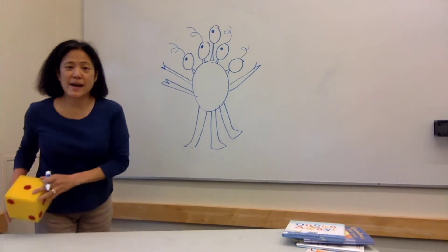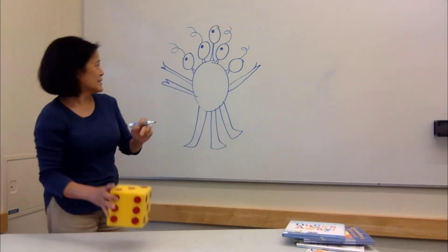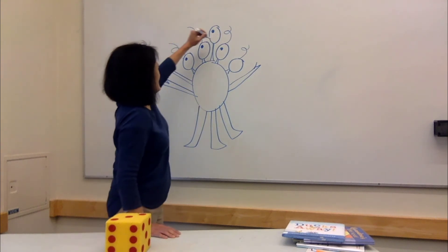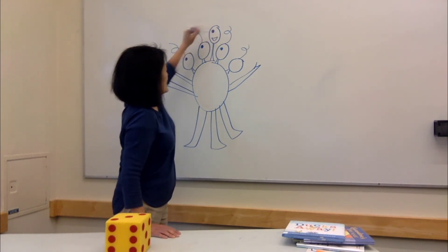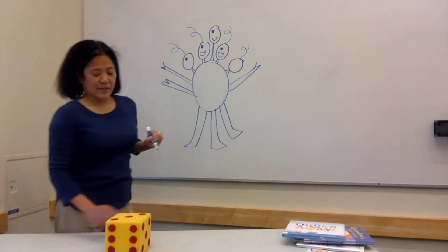And then how about some mouths? You can be really creative with this. Three mouths. One, two, three. And five heads. This is the first mouth. This is the second mouth. This is the third mouth.